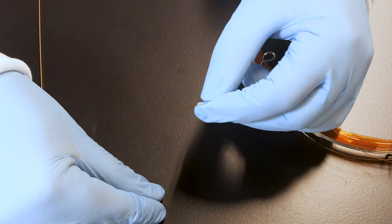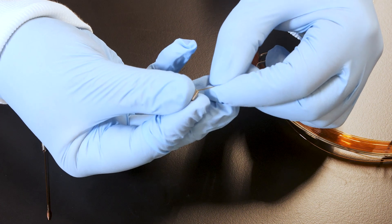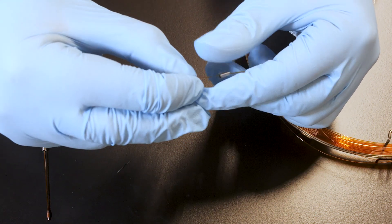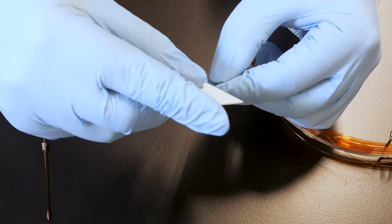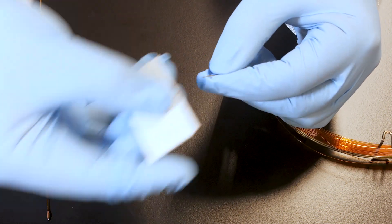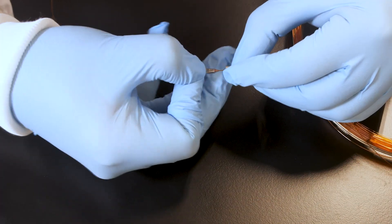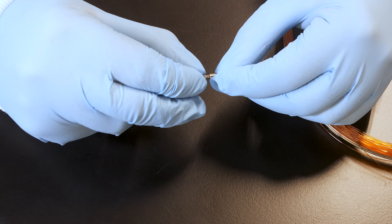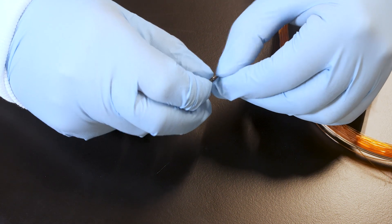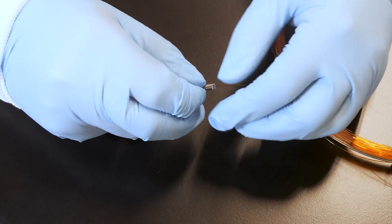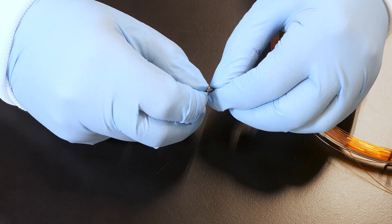Now slide the female micro connector end fitting onto the second column. Trim the end of the column ensuring it has a clean square cut. Next, insert the column into the ferrule and screw the female micro connector end fitting into position. Make sure the column is seated inside the ferrule while gently tightening the connector.